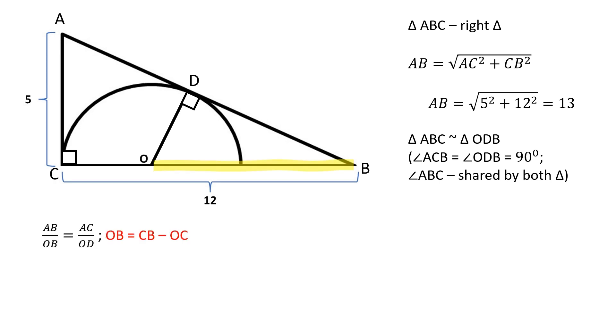OB is equal to CB minus OC, which is 12 minus radius.